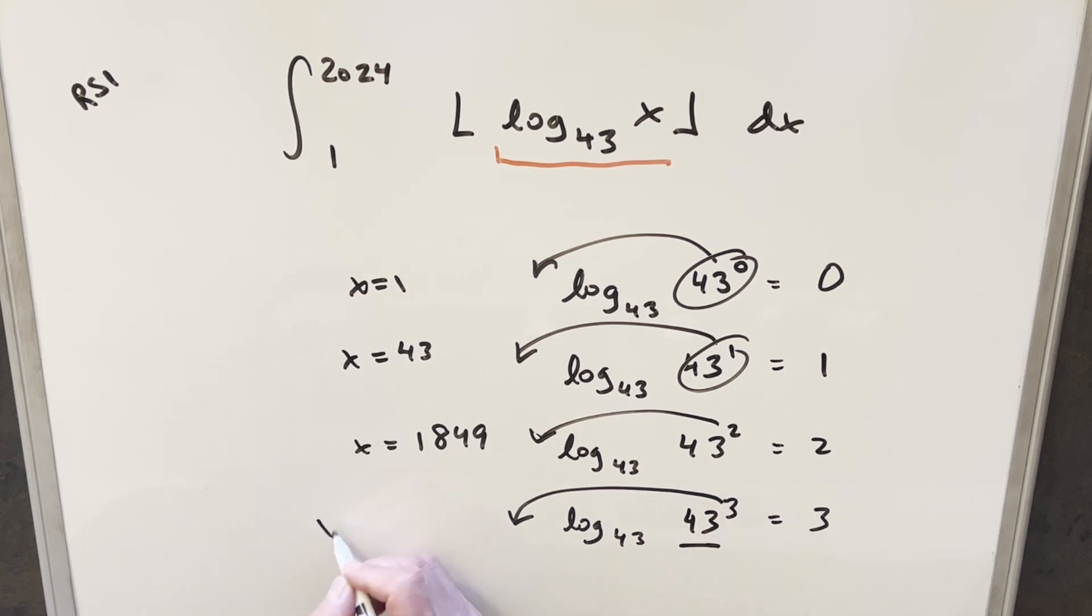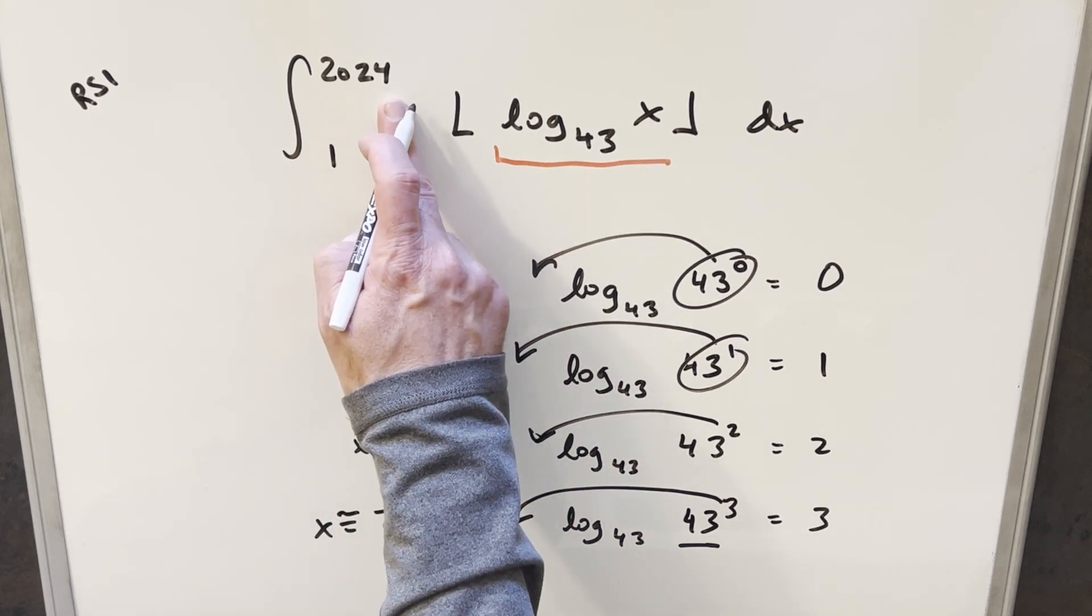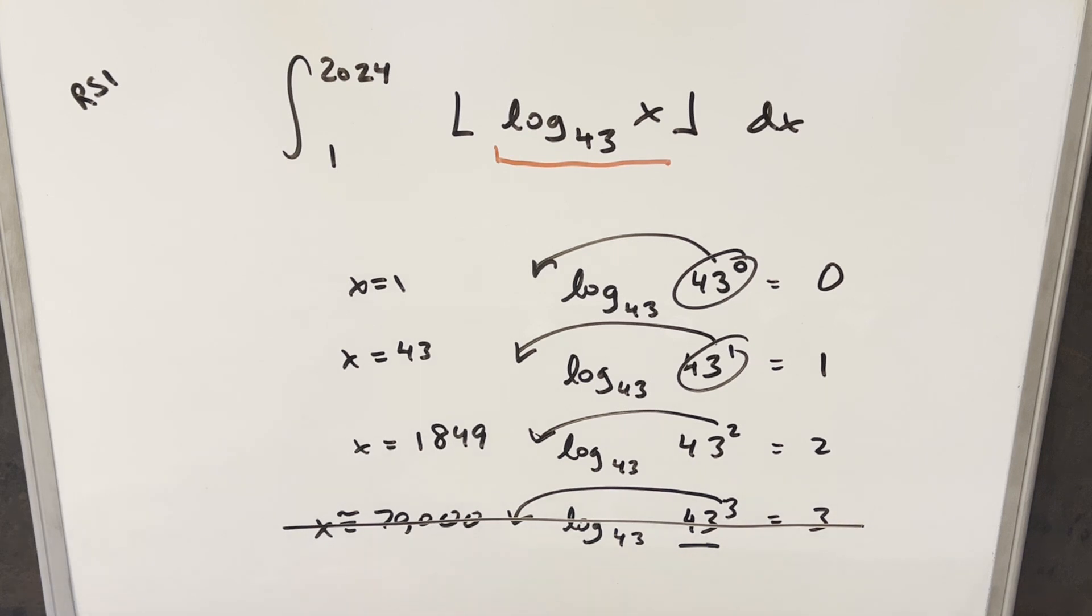And here for this one, I don't really know what that is. That's going to be like, I'm just guessing, it's like 70,000. So it's going to be way greater than our upper bound of 2024. So we really don't need to worry about this value here.